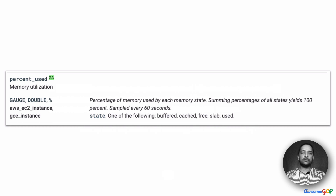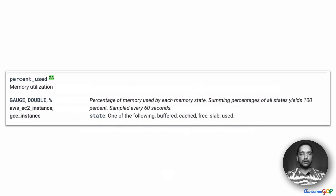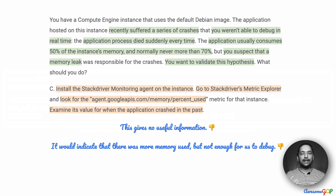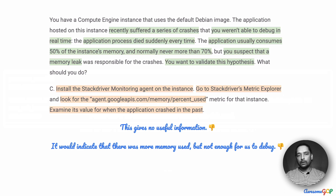What does this give us? Percent use. Just looking at the name, we can guess what the metric we're going to see would be. This essentially gives us the amount of memory used. But this gives us no useful information. At best, it would indicate that at the point of crash there was a large amount of memory used. But is that a real indication of a memory leak, or could it be that the application is behaving as expected, with no memory leaks, but just consuming more memory? So this by itself is not useful.